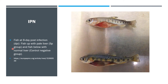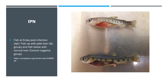A fish at 8 days post-infection is also shown, presenting with a pale liver. This fish was infected with the SP group of the IPN virus, alongside a negative control fish showing a normal liver.